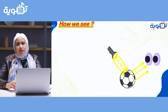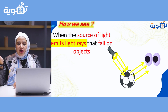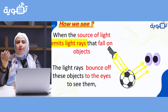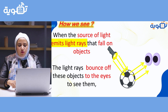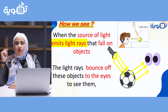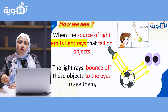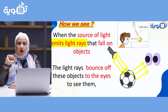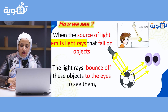So, how can we see? When the source of light emits light rays, they bounce off objects to our eyes so we can see them. A light bulb sends out light, the light falls on the table, and then from the table to my eyes. Light falls on the laptop, then from the laptop to my eyes.